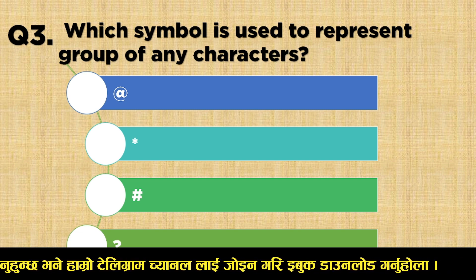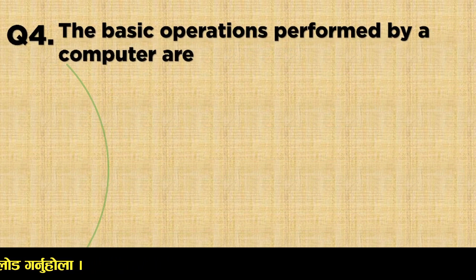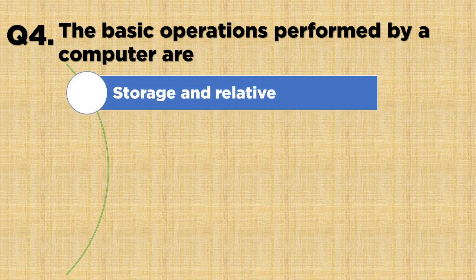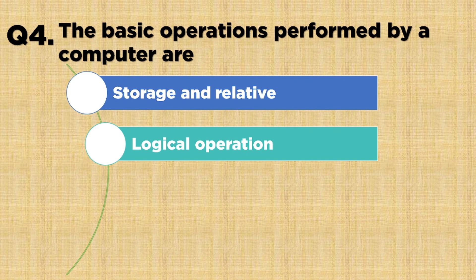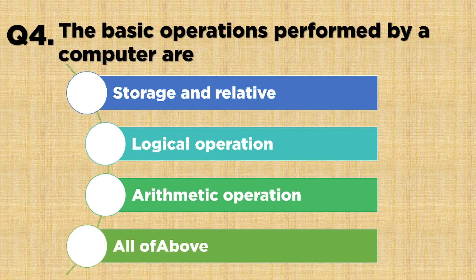Question number 4: The basic operations performed by a computer are — Option A: Storage and Relative, Option B: Logical operation, Option C: Arithmetic operation, Option D: All of the above. The answer is All of the above.